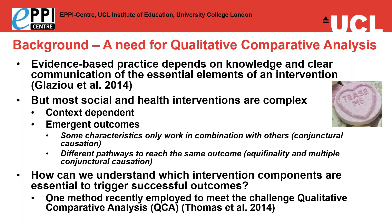We need to be able to communicate some of these messages for decision-makers in order to influence policy and practice, and we need to understand what the essential elements of an intervention are. In complex interventions, we've got context-dependent relationships and emergent outcomes — characteristics that only work in combination with others. This is an example of conjunctural causation. We've also got different pathways to reach the same outcome, so equifinality or multiple conjunctural causation. We need synthesis methods that allow us to understand which intervention components are essential to trigger successful outcomes.